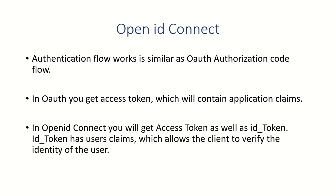But when you mention an ID token with code, Azure AD will also send an ID token, and it is the responsibility of your application to verify that ID token with the help of Azure AD. This step where your application verifies the security token is what makes OpenID Connect an authentication protocol. In OAuth 2.0 there is no validation done for user identity, so it is an authorization protocol. Whereas in OpenID Connect, your application verifies the identity of the user by validating the ID token.